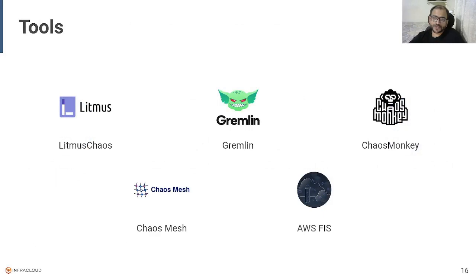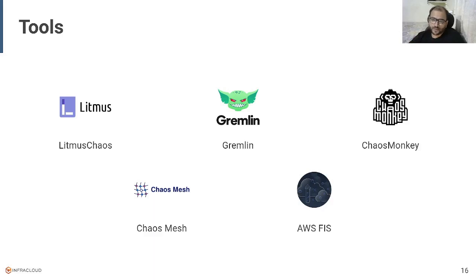What are the tools available for chaos engineering? There is Litmus Chaos, Gremlin, Chaos Monkey, Chaos Mesh, and you can also use AWS FIS. All these tools mainly do the work for you — you need to create chaos and inject it using them.